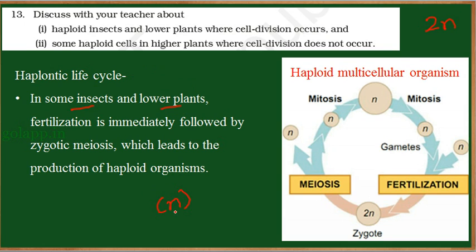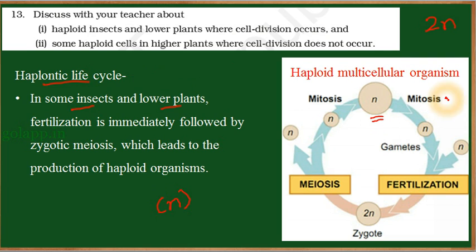Organisms with only one set of chromosomes have what is called a haplontic life cycle. This kind of haplontic life cycle starts with a cell containing one set of chromosomes in the adult body, so the adult body has only one set of chromosomes.